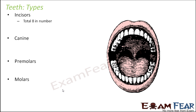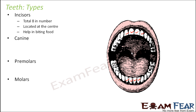Incisors are total eight in number and are located at the center — four on the top and four on the bottom, at the front of the mouth. These are the first teeth to erupt. In the milk teeth set they develop around six months of age, and in the permanent set around eight to nine years of age. They help in biting food — when you try to eat something, you bite it with these front teeth.